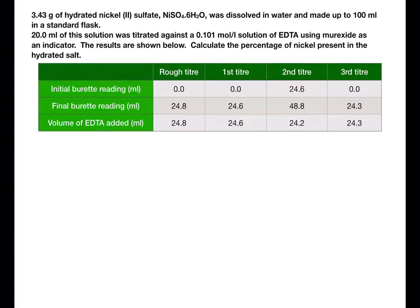So here we have 3.43 grams of hydrated nickel(II) sulfate dissolved in water and made up to 100 ml in a standard flask. 20 ml of this solution is then titrated against a 0.101 mol per litre solution of EDTA and we use murexide as an indicator. We have the results in the table and we're to calculate the percentage of nickel present in the hydrated salt.